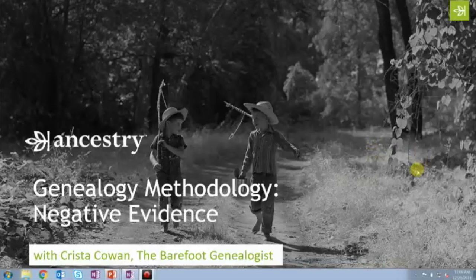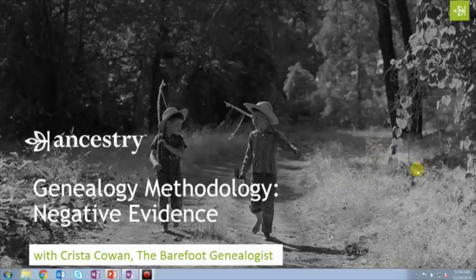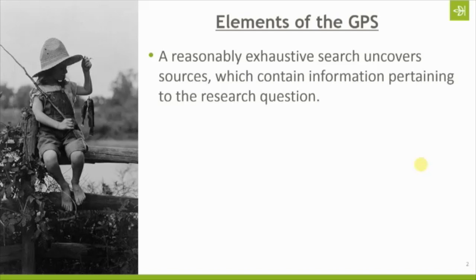Let's dive in with an introduction or review of the genealogical proof standard. The first element is a reasonably exhaustive search. During a reasonably exhaustive search, what we're doing is uncovering sources which contain information pertaining to the research question. This presumes we have a specific research question we are trying to answer — who are the parents of John Smith born in 1850 in Pennsylvania, or who are the children of a particular couple, or where was this individual born or where did he die? We do a reasonably exhaustive search looking in all of the available records to uncover sources.